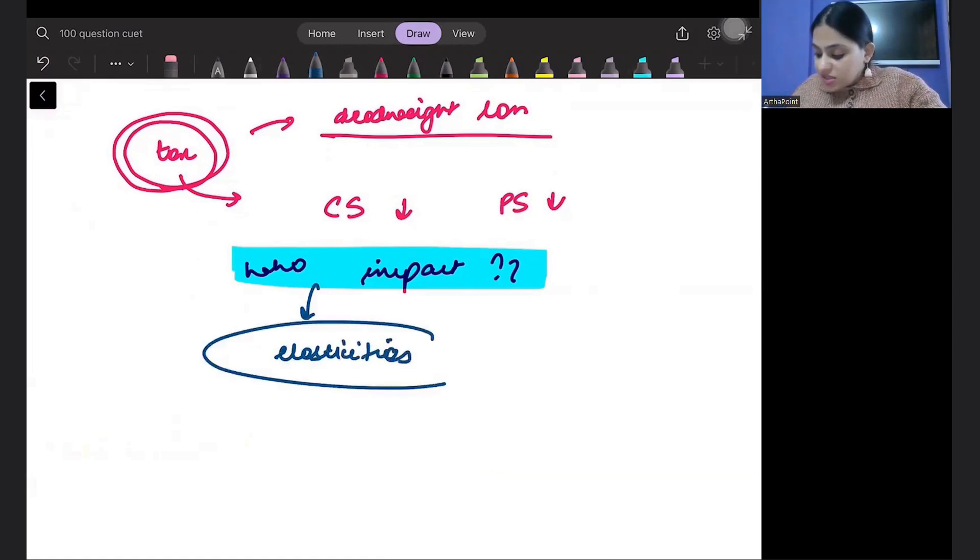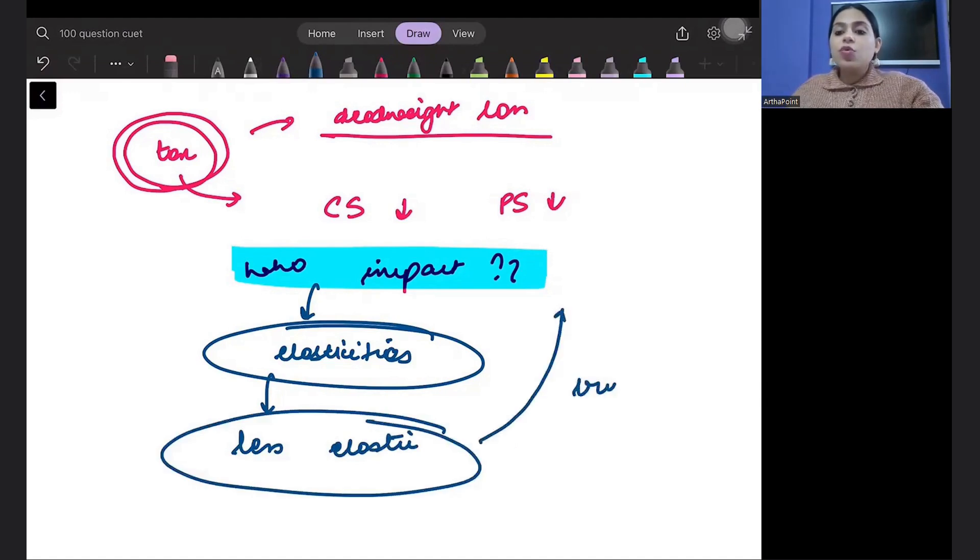This depends on the elasticity of demand and supply. And whichever is less elastic, will bear more burden of the tax. Take for example medicines. In medicine, consumer is inelastic. Consumer needs medicine no matter what. Right? So the supplier of medicine can put the entire burden on the consumer. Because he knows that medicine has to be consumed at any cost. So in that case, the entire burden will fall on the consumer whenever tax is imposed. And if the entire burden is on the consumer, then his consumer surplus will fall a lot.